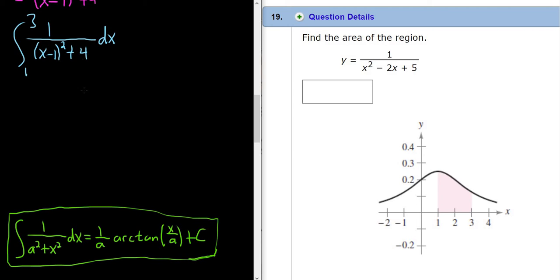So here you see a is going to be 2 because 2 squared is 4. So we do have to make a u sub because here it's x and then up here it's x minus 1. So let's do that. Let's let u equal to x minus 1 and then so du is dx.